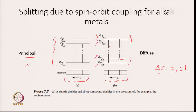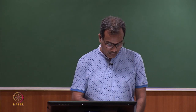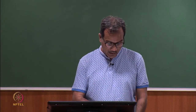The compound doublet arises because of the very narrow gap between ²D₃/₂ and ²D₅/₂. The lambda max of these two transitions is at almost the same position, so the triplet appears diffuse or looks like one peak — hence it is known as a compound doublet.